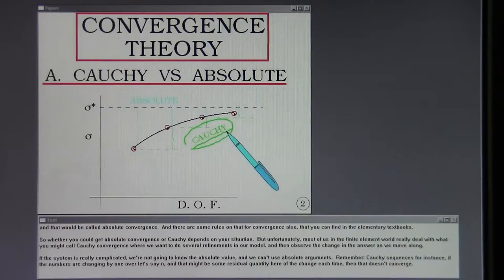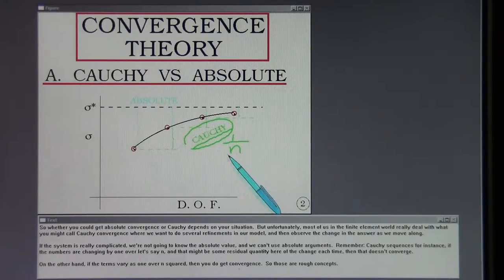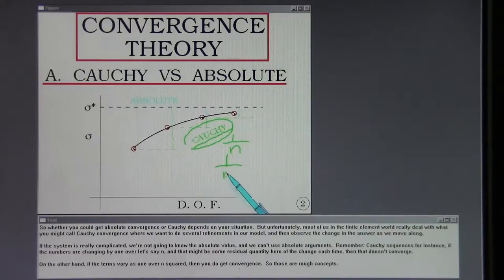Remember Cauchy sequences: if the numbers are changing by one over n, and that might be some residual quantity here of the change each time, then that doesn't converge. On the other hand, if the terms vary as one over n squared, then you do get convergence. So those are rough concepts.